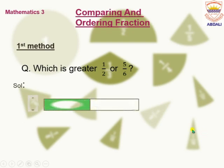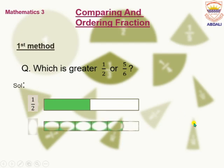Here we have the diagrammatic representation of 1 by 2. We have total 2 parts from which we are taking 1 part. Similarly, we have representation of 5 by 6. We have total 6 parts from which we are taking 5 parts: 1, 2, 3, 4, 5.